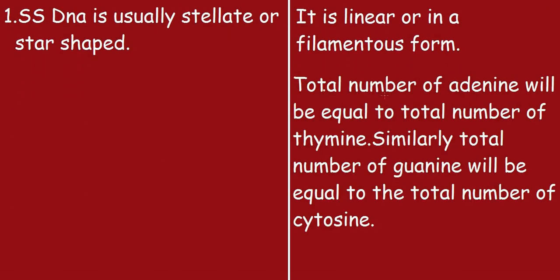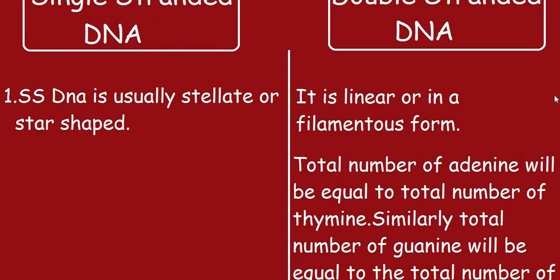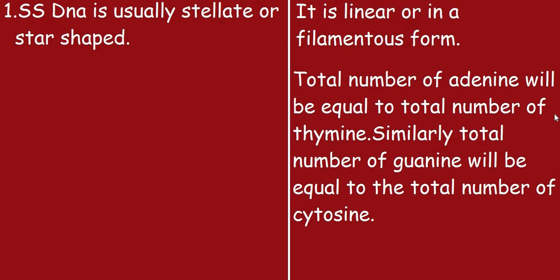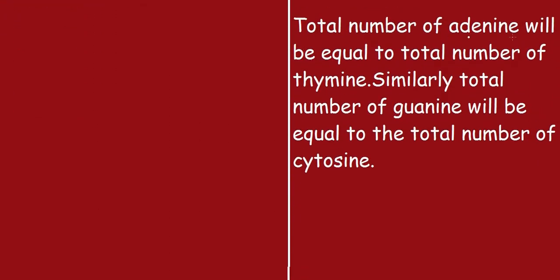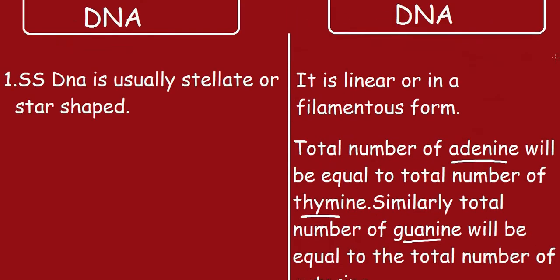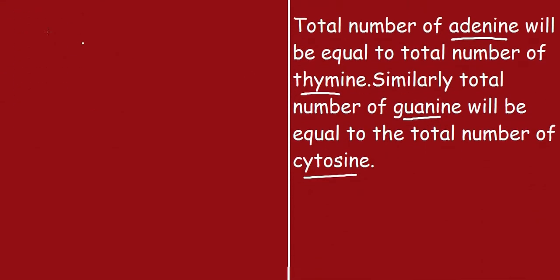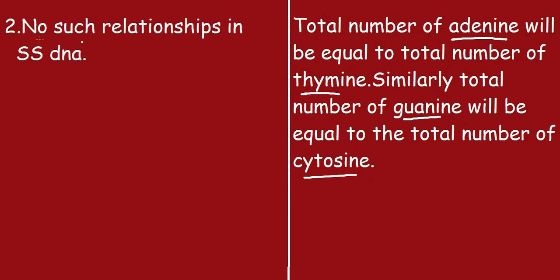The second point: for double-stranded DNA, the total number of adenine equals the total number of thymine, and similarly the total number of guanine equals the total number of cytosine. For single-stranded DNA, no such relationship exists.